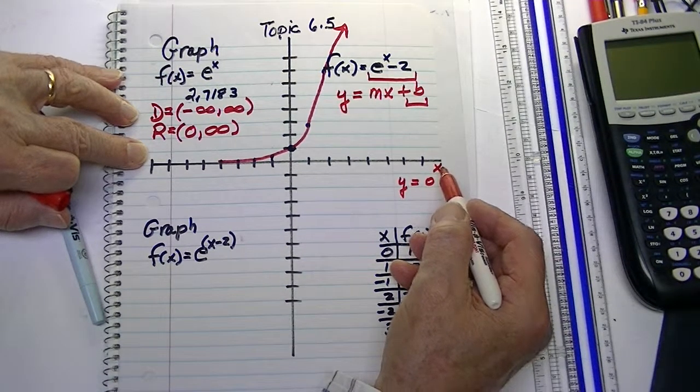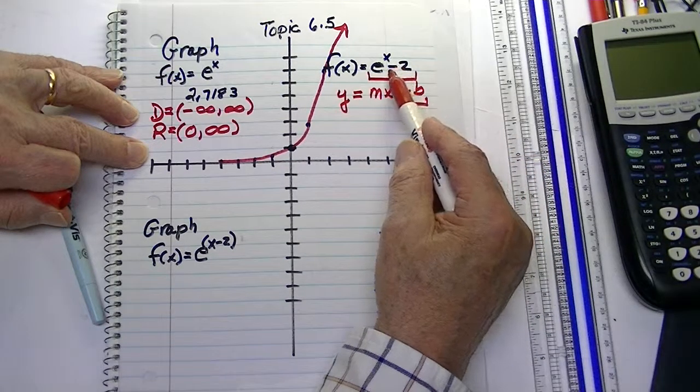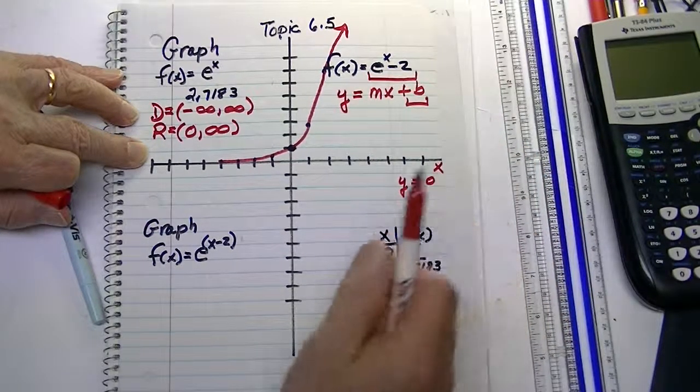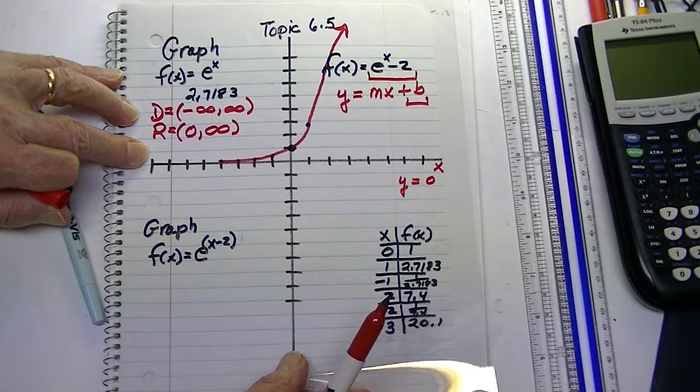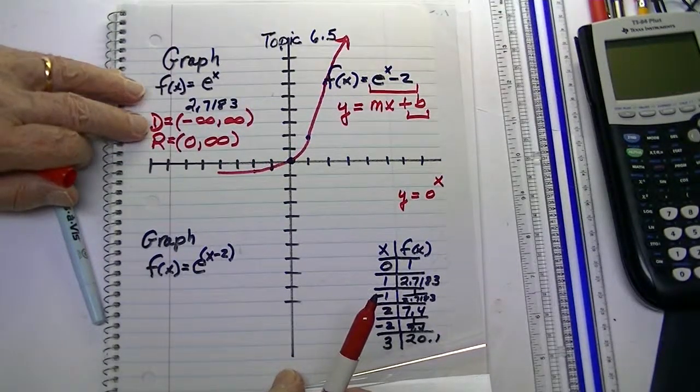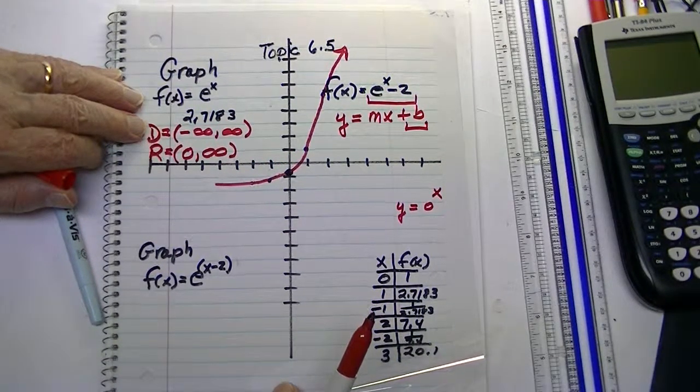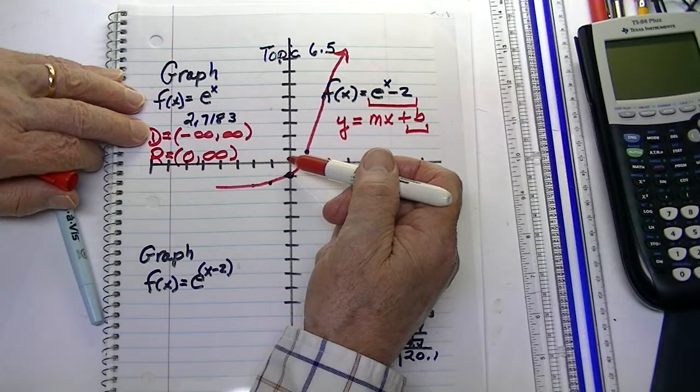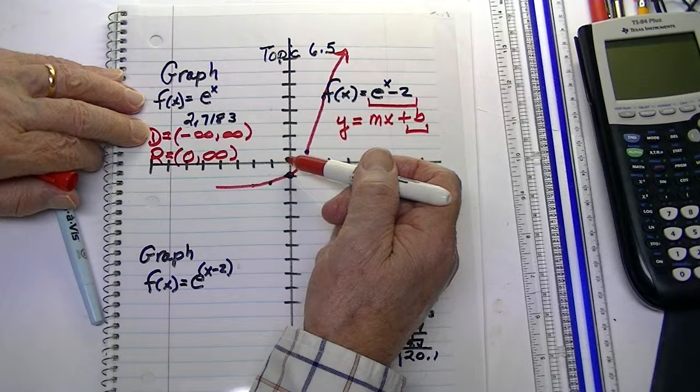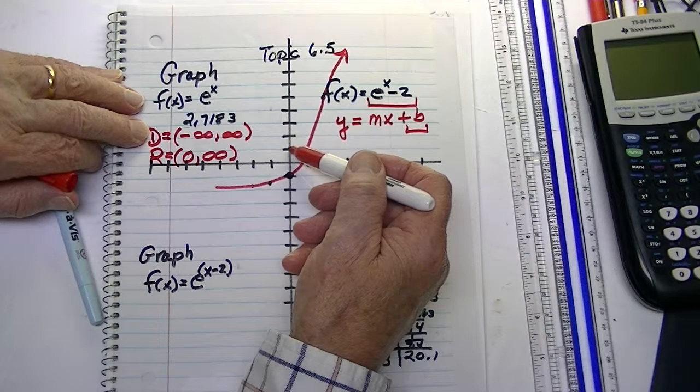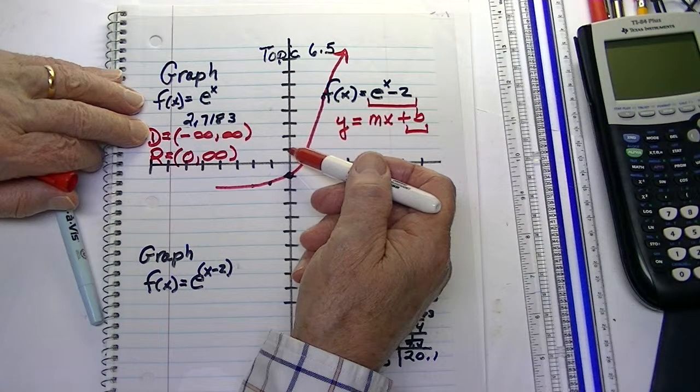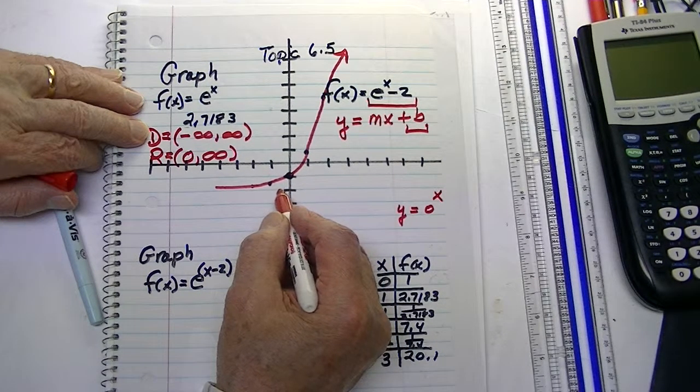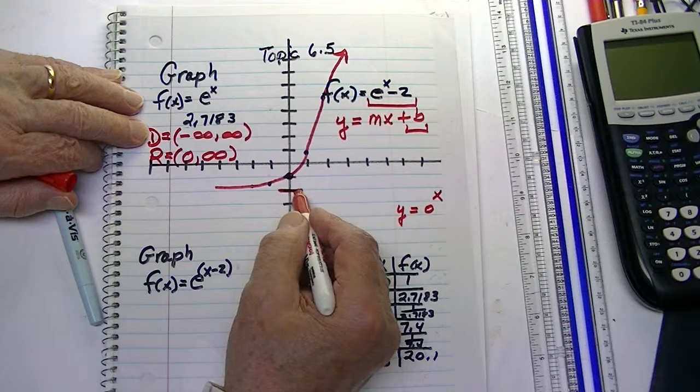Now, what happens when we have a negative 2 in this form? Well, interestingly, everything stays the same. But we just shift our graph down. Now, we had it at 0. Originally, this was at 1. So, we're shifting the 1 down, 2, and the whole line down to this new point right here.